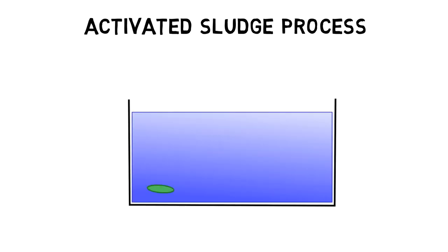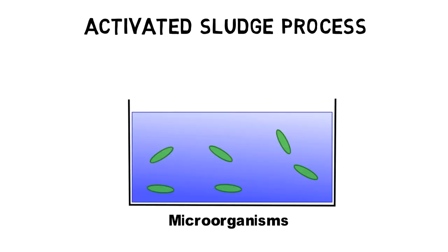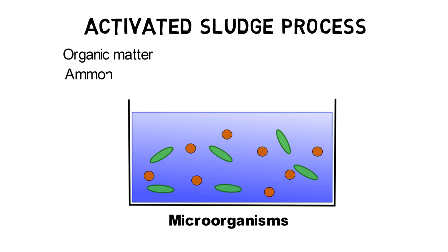The activated sludge process requires certain types of microorganisms to break down organic matter in wastewater. As any other living organism, the microorganisms need energy to reproduce. When breaking down organic matter or oxidizing ammonium NH4+ to nitrite NO2-, energy in the form of ATP for microorganism reproduction is released.